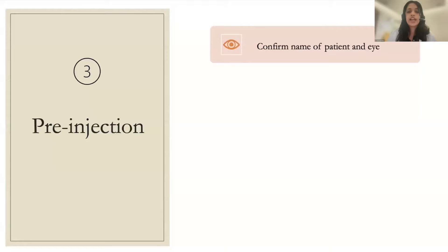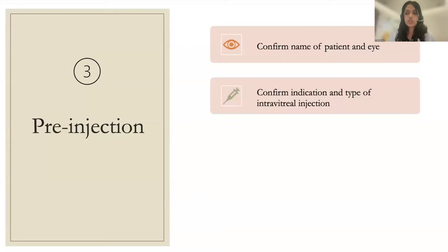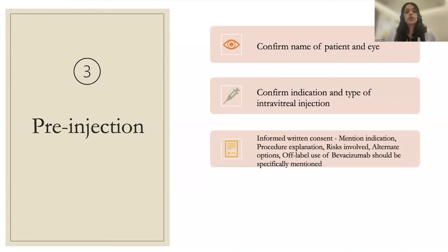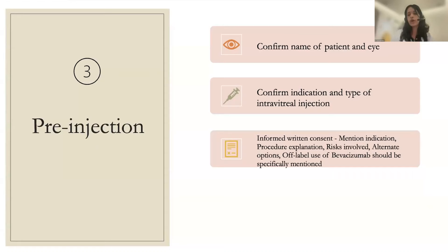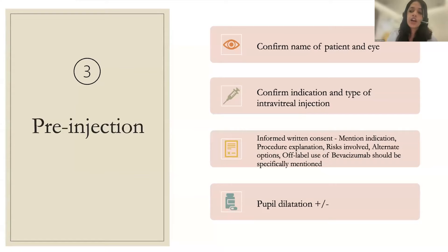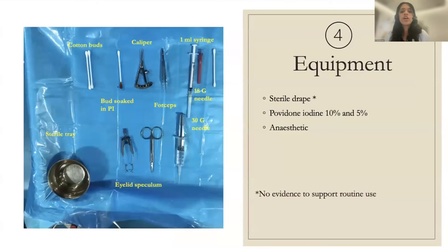Tip three — pre-injection protocol: confirm the patient's name and the eye being injected (perform a time-out), confirm the indication and type of intravitreal injection. If doing multiple patients in one day, ensure the correct drug reaches the correct patient. Obtain written informed consent explaining the indication, procedure, risks, and alternate options — specifically mentioning off-label status when using bevacizumab. Pupillary dilation prior to injection is recommended for beginners but is not always mandatory.